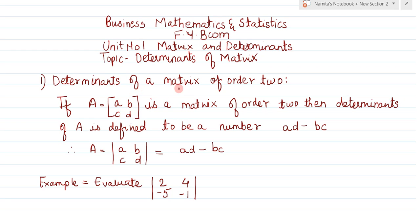Determinants of a matrix of order 2: if A is a matrix with elements a, b, c, d in 2 rows and 2 columns, then the determinant of A is defined as a number. The determinant of A uses the straight line notation.